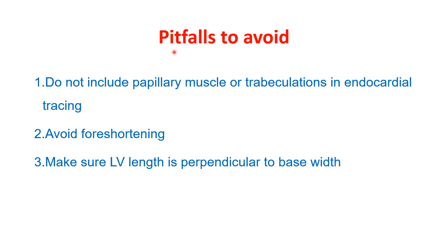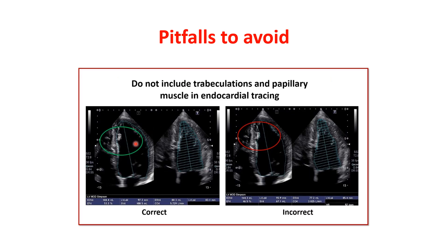Pitfalls to avoid with the Simpson method: number one, do not include the papillary muscles or trabeculations in the endocardial tracing. For example, this is the correct tracing as it does not include the trabeculations or papillary muscle, while this is a wrong tracing as it included the trabeculations and the papillary muscle.